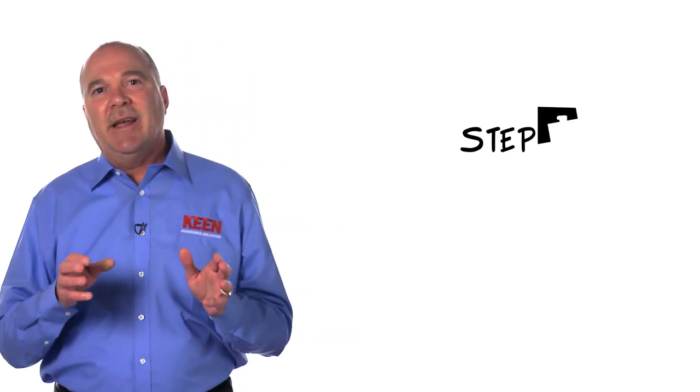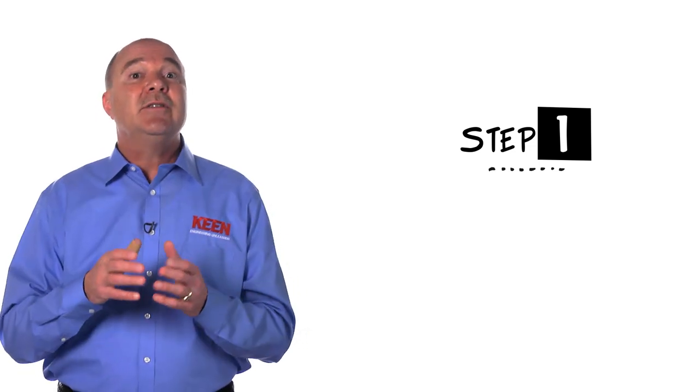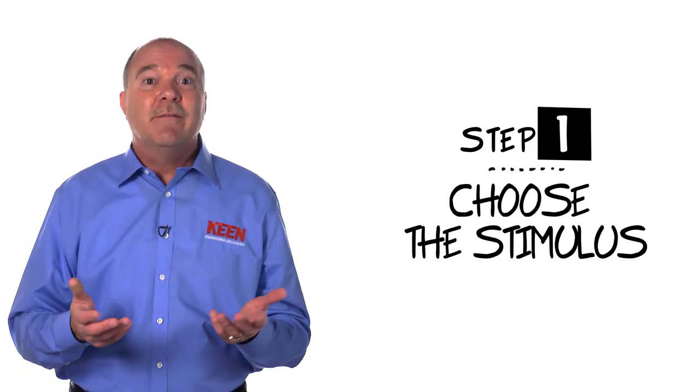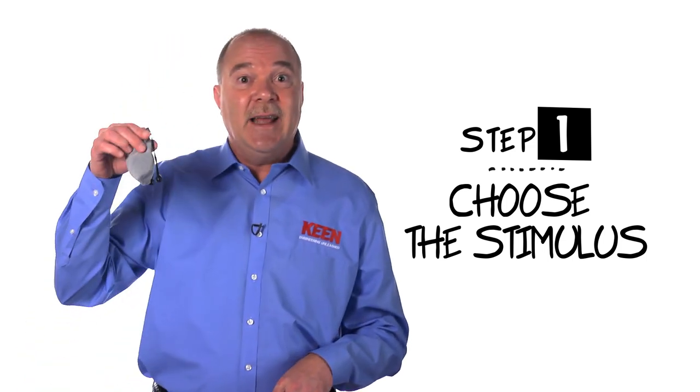So the first step in the bisociation process, assuming you already have your objective clearly defined, is to choose the stimulus. For example, I needed some stimulus for an ideation session the other day, so I just grabbed this off my desk.